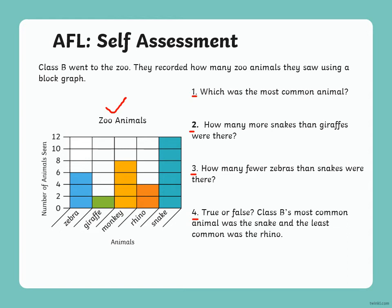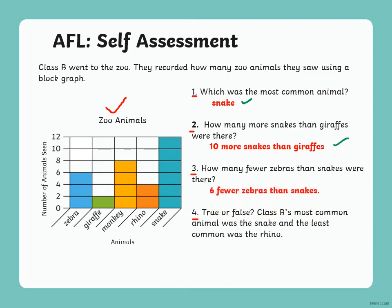Now let's check the answers. Which was the most common animal? The most common animal was snake. How many more snakes than giraffes were there? Ten more snakes than giraffes. How many fewer zebras than snakes were there? Six fewer zebras than snakes. And the last one — true or false? Class B's most common animal was the snake and the least common was the rhino. This is false, as Class B's most common animal was the snake and the least common was the giraffe.